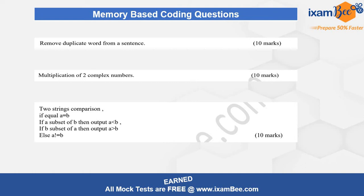Whenever you get a question it will come as a problem statement like the one I am showing right now, followed by input and output specifications. You have to write your program according to those specifications — the input specification tells you the format in which test cases will be fed to your code, and the output specification tells you how to format your output. You can code in any of three languages: C++, Java, or Python — even different languages for different questions.